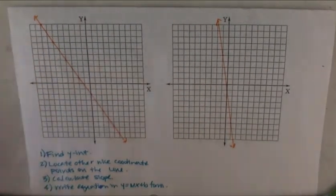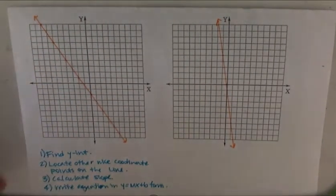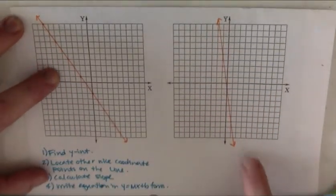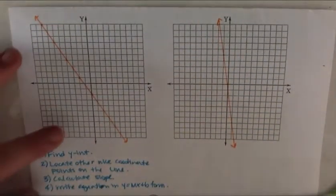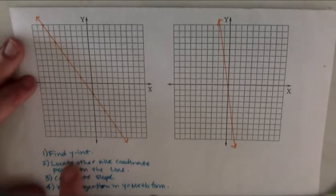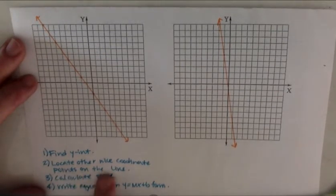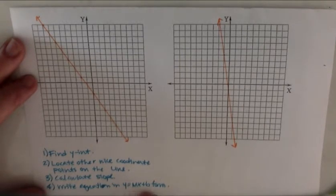Hey everybody, we are going to look at finding equations for lines with a nice negative slope. So again, we are going to go through these steps: finding the y-intercept, locating other nice coordinate points on the line, calculating the slope, and writing an equation in y equals mx plus b form.